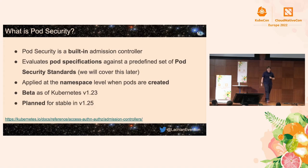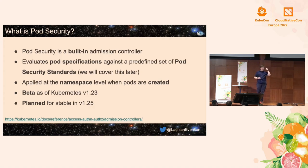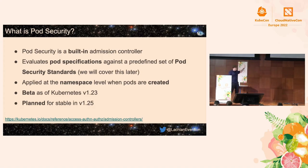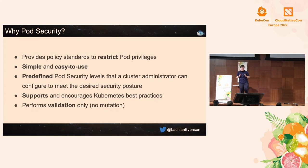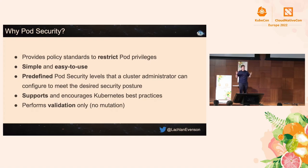Pod security is actioned when pods are created in those namespaces. It is currently in beta as of Kubernetes 1.23. It is planned to go to stable in 1.25. Why is this important? We want to level up the security of your Kubernetes clusters and the workloads running on them. This provides policy standards to restrict pod privileges, reducing the surface area of attacks and making your cluster more secure.